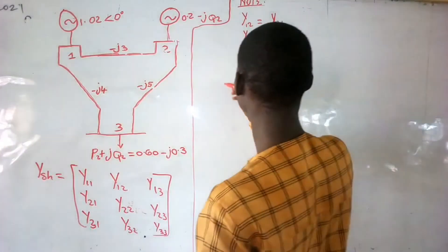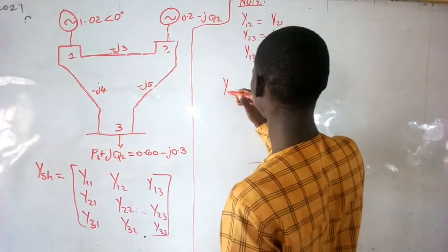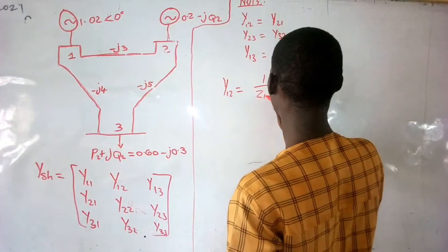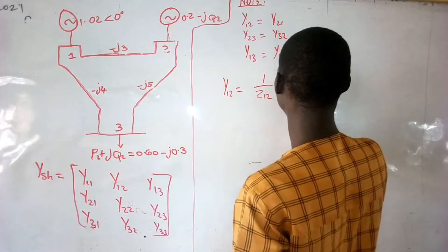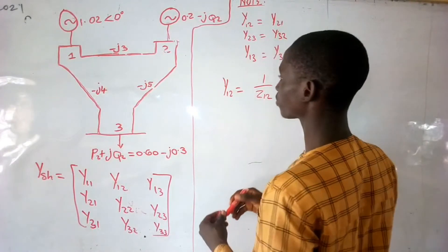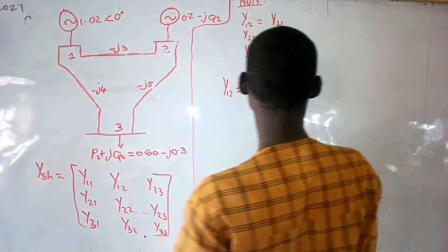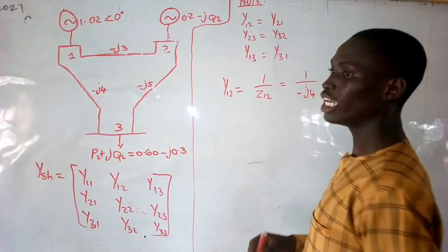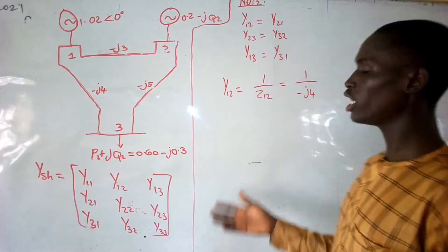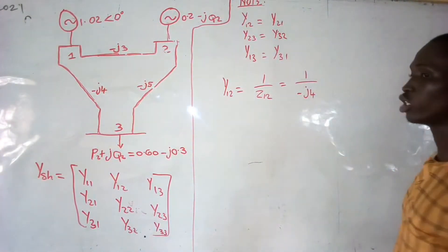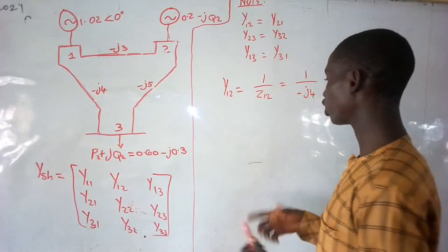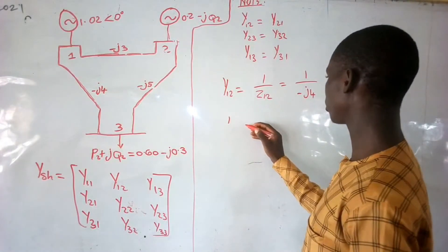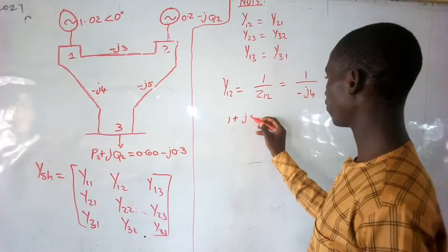I know that Y12 is equal to 1 over the impedance of 12, which is equal to 1 over minus J4. In normal impedance, you should have something like 1 plus J5.